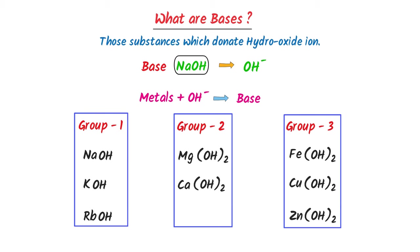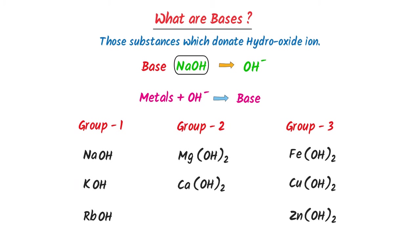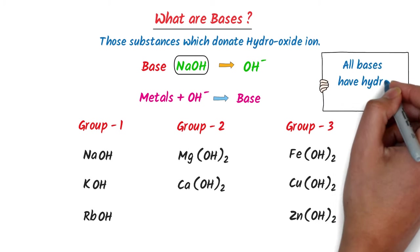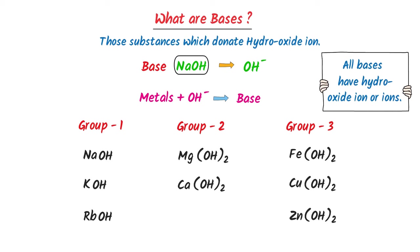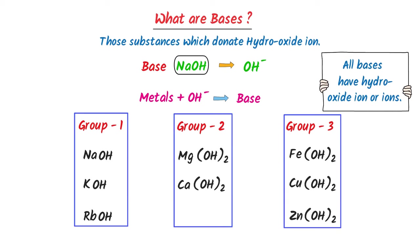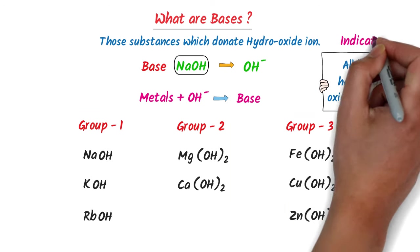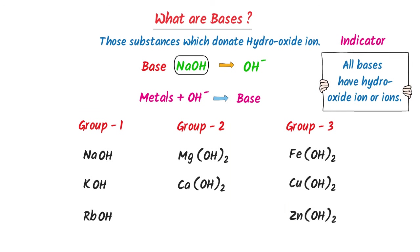This is the list of all important bases. Remember that all the bases have hydroxide ion — all the bases have hydroxide ion. So the hydroxide ion is the best indicator of bases. Note down this important trick.